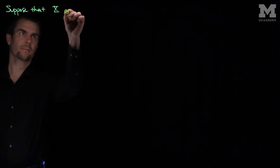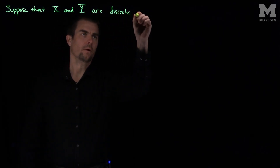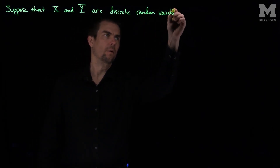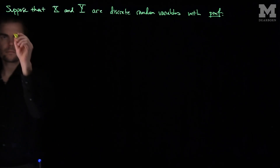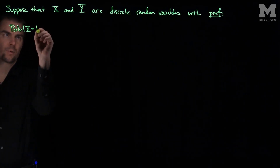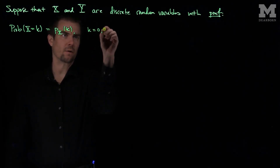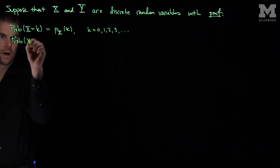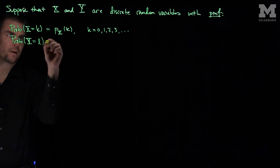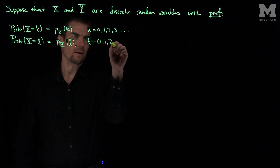Let's suppose that X and Y are discrete random variables with PMFs — probability mass functions — given by the following formula. The probability that X equals k will be P_X(k), where k is 0, 1, 2, 3 — the whole numbers. Similarly, the probability that Y equals L will be P_Y(L), where L goes from 0 to infinity — the whole numbers.